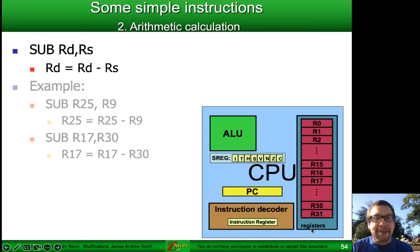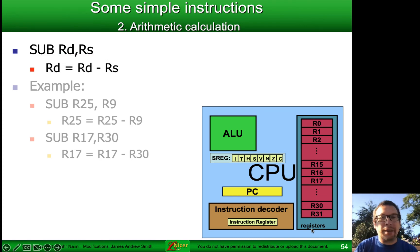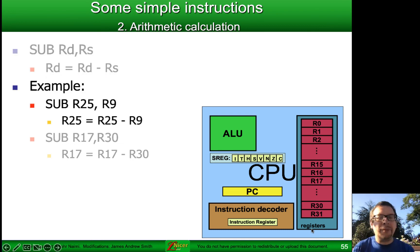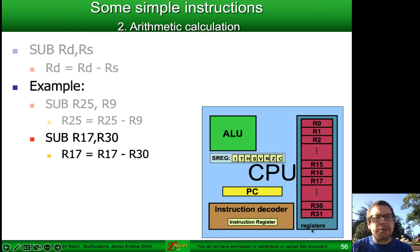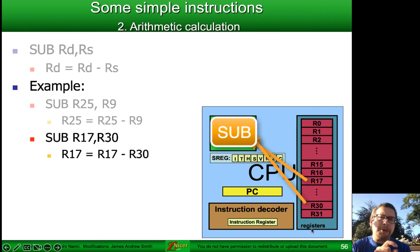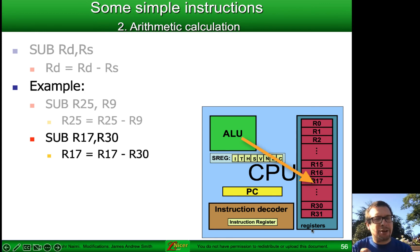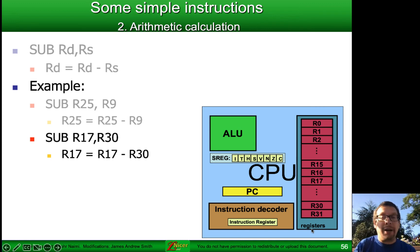Now let's do subtraction. SUB is subtraction in AVR assembler. I'm going to subtract whatever is in register Rs from what is in register Rd and store the result in Rd. In a high-level language: Rd = Rd - Rs. Example: SUB r25, r9 — take the contents of r25, subtract the contents of r9 from it, and store the result in r25. Another example: SUB r17, r30 — r17 = r17 - r30, as you would represent it in MATLAB, Java, C, or Python.